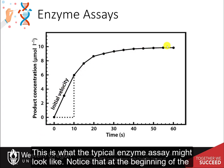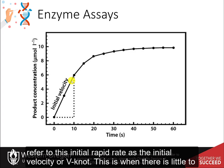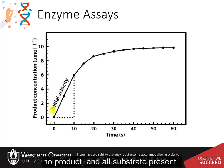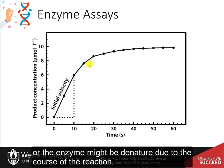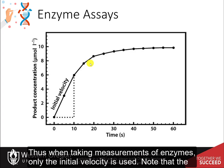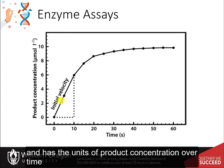This is what a typical enzyme assay might look like. Notice that at the beginning of the reaction, the curve is in the linear phase. We refer to this initial rapid rate as the initial velocity, or V0. This is when there is little to no product and all substrate present. Over time, the reaction slows as the substrate in the mixture is used up, or the enzyme might denature. Thus, when taking measurements of enzymes, only the initial velocity is used. Note that the initial velocity is the slope of the linear portion of the line and has the units of product concentration over time.